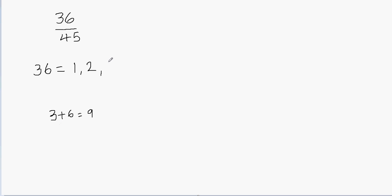So 3 is a factor of 36. How about 4? Yes, 4 is a factor of 36 because 4 times 9 is 36. How about 5? No — for a number to be divisible by 5, it should end in 0 or 5. So 36 is not divisible by 5. How about 6? Yes, 6 is a factor of 36 because 6 times 6 is 36.